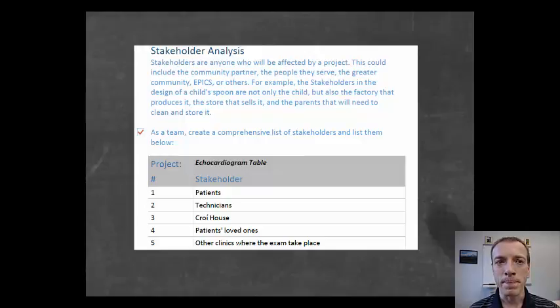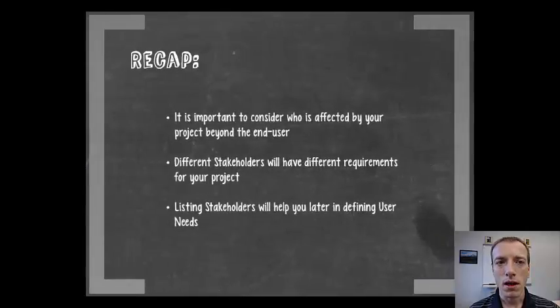So to recap, it's important to consider everyone who's affected by your project, especially because these stakeholders that you think about now are going to affect the user needs that you write later, and those user needs will affect your specifications, the outcome of your project and how you design it, and then into how you go about testing the project. So all of these things cascade, so it's important, even though this seems very simple now, to go through and do this at this point.